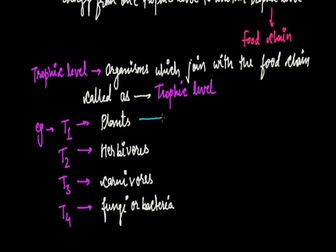Plants in the food chain are called producers. They are called producers because they produce energy in a food chain — they are the main source of energy. They synthesize food by photosynthesis, and for photosynthesis they obtain energy from the sun. So the main source of energy in a food chain is the sun, and food is synthesized by plants. So they are called producers.